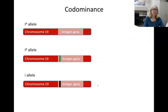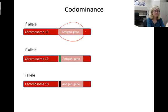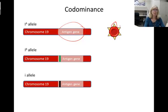Codominance is often confused with incomplete dominance, but they're actually quite different. Let's look at codominance in blood type. There are three different alleles in the ABO blood type gene. In the A allele, the gene codes for a protein that adds one type of carbohydrate to the membrane of a red blood cell.